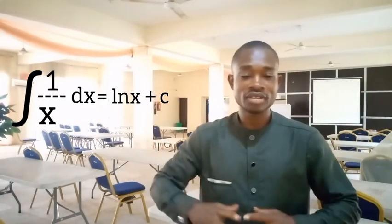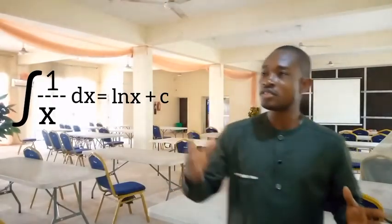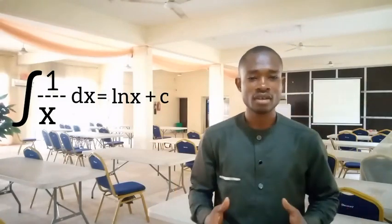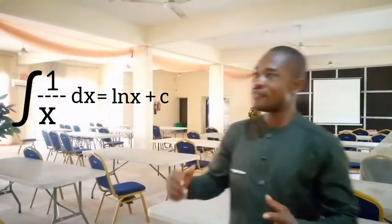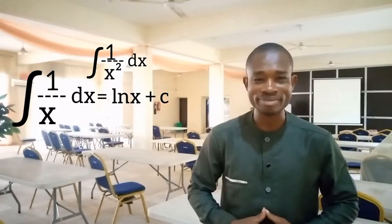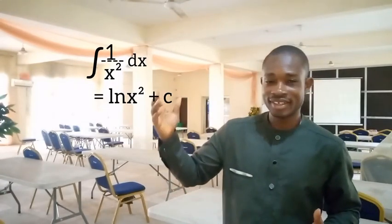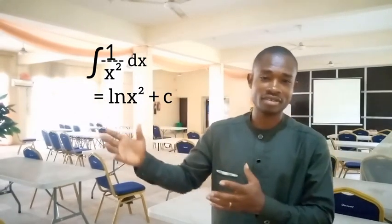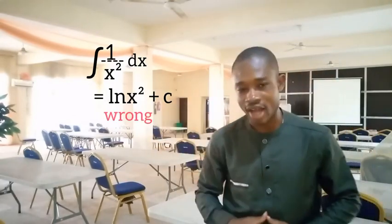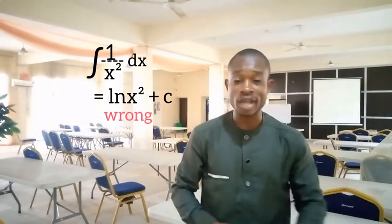If I say that the integral of 1 over x dx is going to give me ln x plus C, what do you think? What if I give you the integral of 1 over x squared dx? What would be the value? Perhaps you may evaluate it to be ln x squared plus C, based on that standard of integral 1 over x dx. However, today I wish to tell you the whole idea of what integral 1 over x dx producing ln x really means.